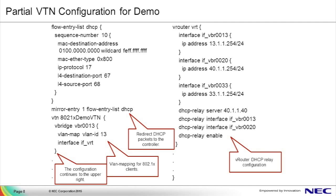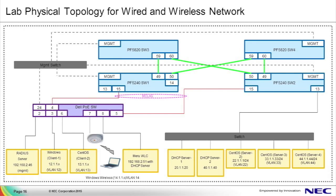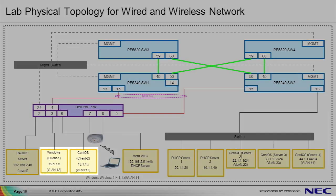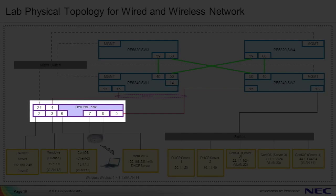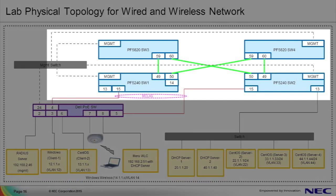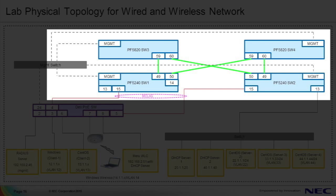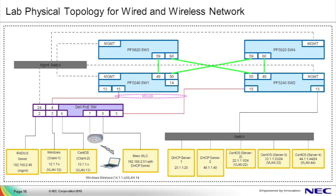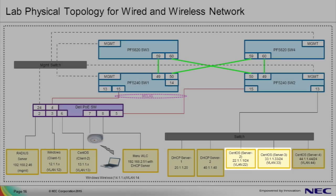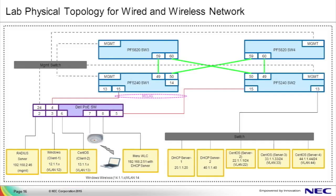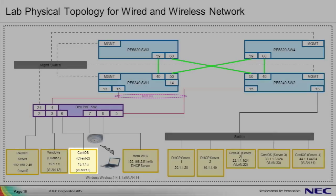Here we're showing our physical topology for our upcoming demo. We have two wired clients, one running Windows and one running CentOS, shown in the lower left. These two devices connect to a Dell PoE switch acting as our 802.1X authenticator. We have an OpenFlow fabric consisting of programmable flow switches configured in a spine leaf representing a campus network. We'll show that each host only has connectivity to the appropriate secure resource, represented as Server 2 and Server 3. We'll first show the Windows user attempting to access Server 2, and second, the Linux user attempting to access Server 3.